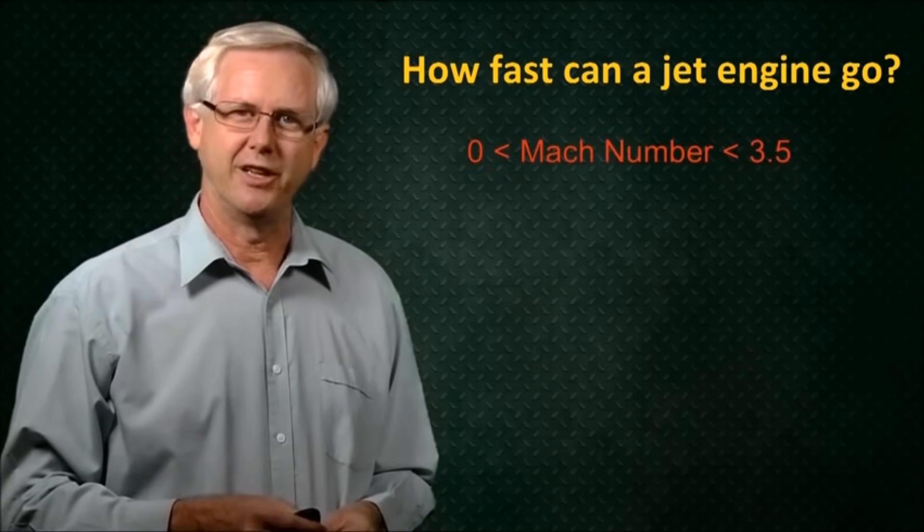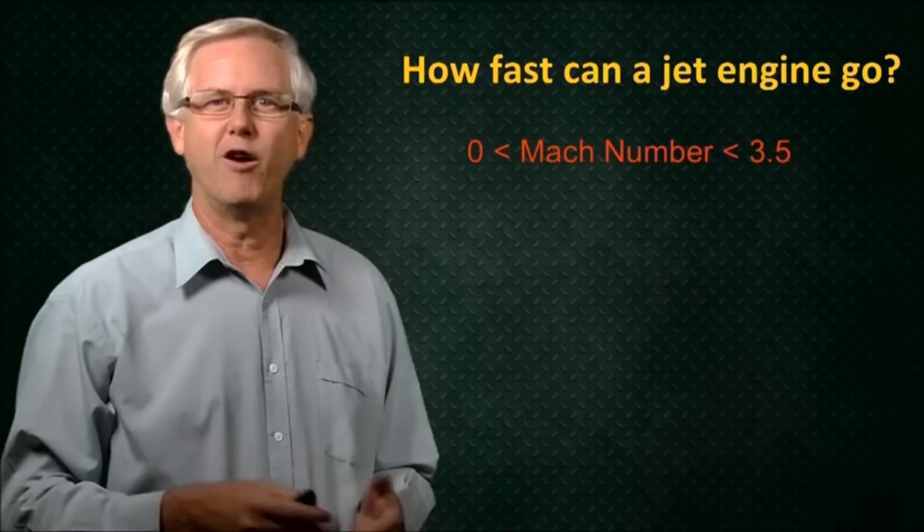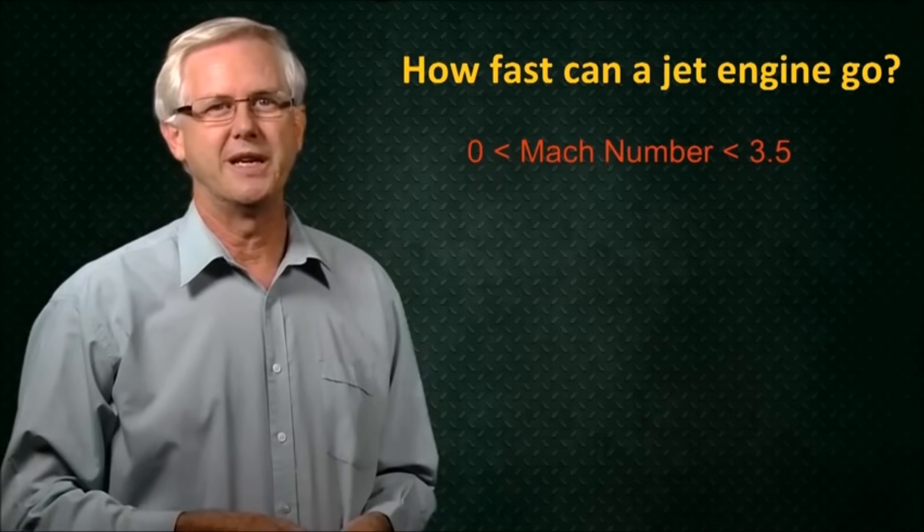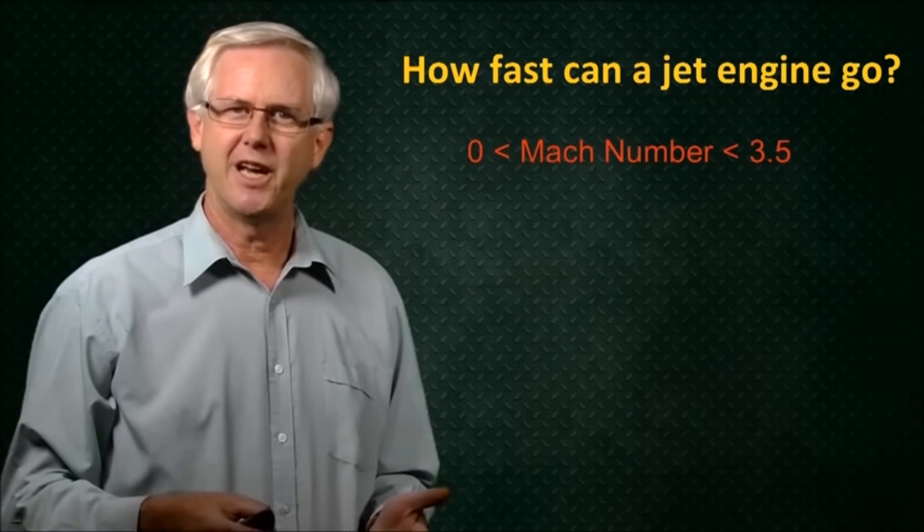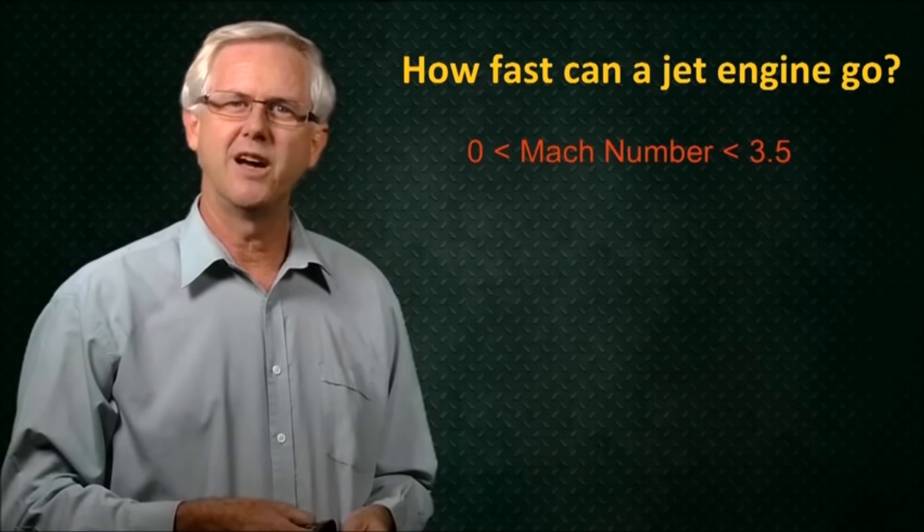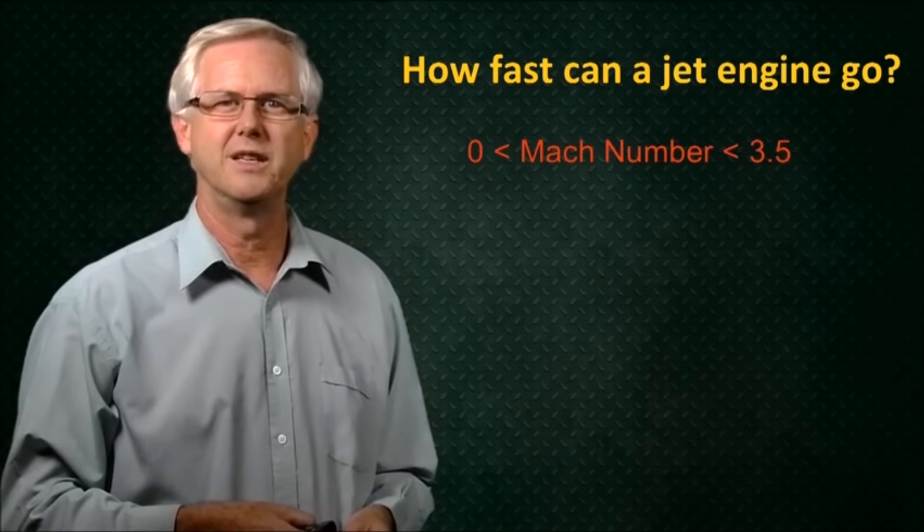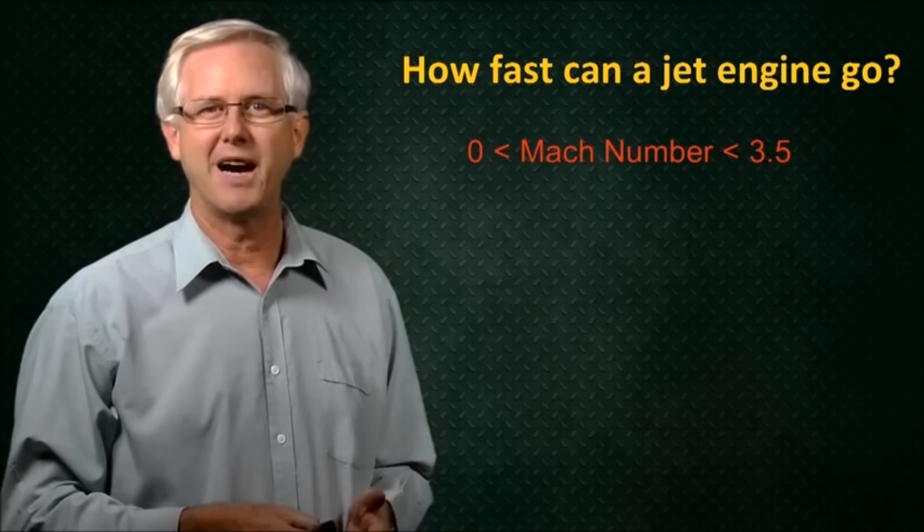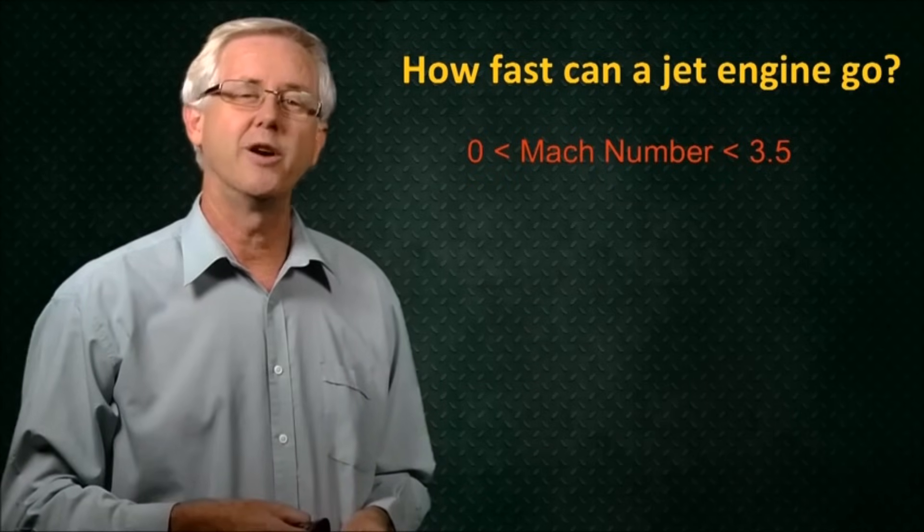The good thing about a jet engine is that you can use it to take off from a runway. So we can start off from zero speed, and jet engines are capable of reaching speeds of around Mach 3.5. So they are not capable of getting us above Mach 5 and into the hypersonic regime.